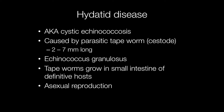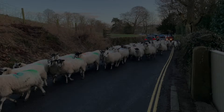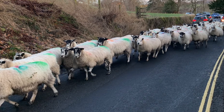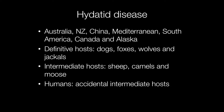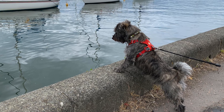Hydatid disease, also known as cystic echinococcosis, is caused by a parasitic tapeworm, Echinococcus granulosus. These tapeworms grow in the small intestine of the definitive hosts and reproduction is asexual. Worldwide, Hydatid disease affects between two and three million people. Intermediate hosts include animals such as sheep, camels and moose, and it is areas with lots of these animals — for example Australia, New Zealand, China, the Mediterranean, South America, Canada and Alaska — that have the highest incidence. The definitive hosts are dogs, foxes, wolves and jackals, and humans are accidental intermediate hosts.